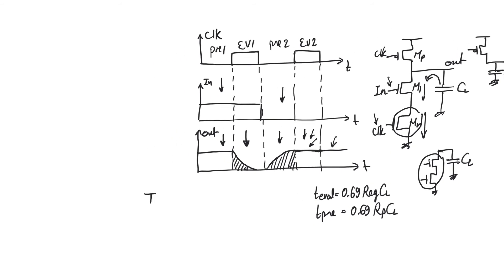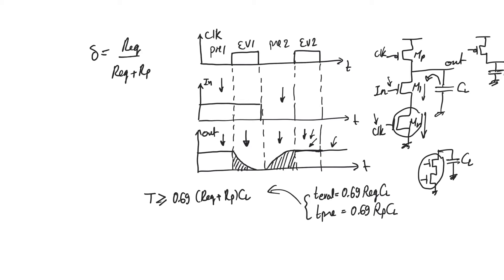The clock period must be greater than or equal to 0.69 × (R_equivalent + R_P) × CL, which is the sum of the evaluate and pre-charge delays. Critically, observing the clock period alone is not sufficient — the clock must also have a specific duty cycle. The duty cycle must equal R_equivalent / (R_equivalent + R_P), which is simply T_evaluate / T_period. These two parameters define the proper clock for this circuit.